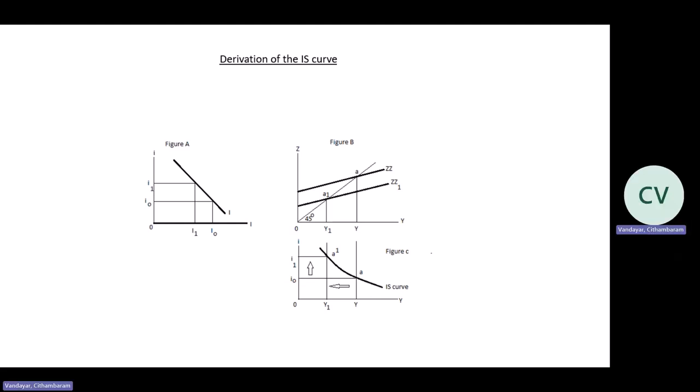If your investments decrease, there will be a decrease in the demand for goods and services, and therefore your aggregate demand — your ZZ curve — will have a parallel downward shift. The new ZZ curve cuts the 45-degree line at A1, which is a point below A. The new equilibrium level of income is now Y1, which is significantly lower than Y. Given the new interest rate of I1, your investments decrease to I1, which leads to a decrease in the demand for goods and services, and your ZZ curve shifts down cutting the 45-degree line at A1.